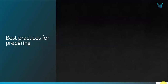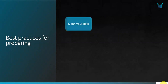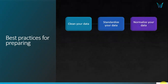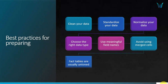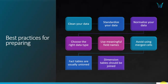Next, let's look at the best practices for preparing your data. The first step is to clean your data. The next best practices are: standardize your data, normalize your data, choose the right data type, use meaningful field names, and avoid using merge cells. Fact tables are usually unioned — you combine or append them — while dimension tables are usually joined. Lastly, keep your data structure simple.